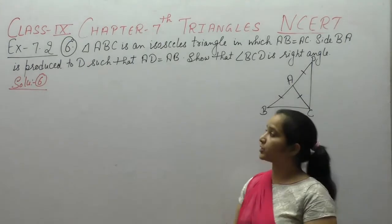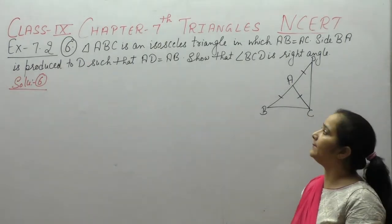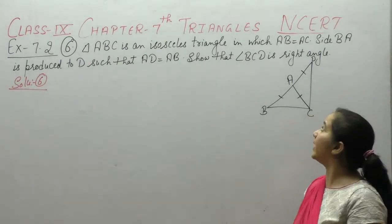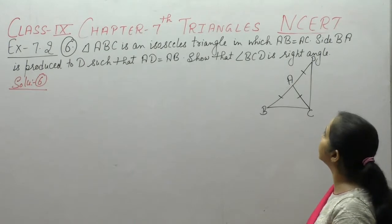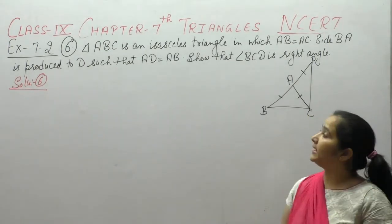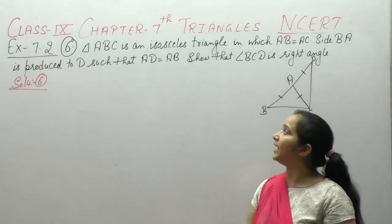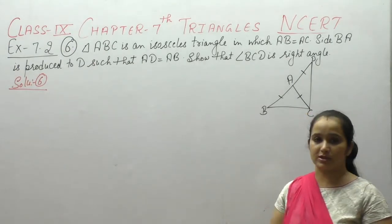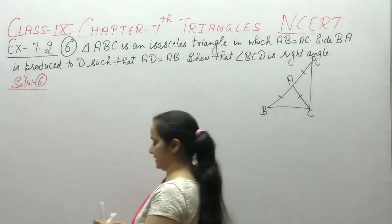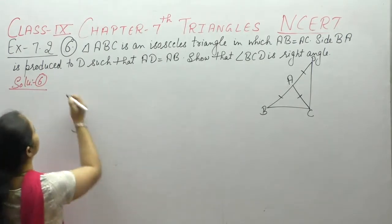Next, question number 6. Triangle ABC is an isosceles triangle in which AB is equal to AC. Side BA is produced to D such that AD is equal to AB. Show that angle BCD is a right angle.